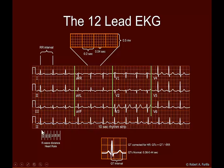Another way to look at this: if the R waves came one large box apart that would be 300 beats per minute; two large boxes apart would be 150; three would be 100; and four would be 75. There's another way to count rate if the rate is not uniform — for example in atrial fibrillation where each R interval is different. We can take a 10-second rhythm strip and count the R waves: 1, 2, 3... up to 13. Multiply 13 times 6 and you get approximately 75 beats per minute.